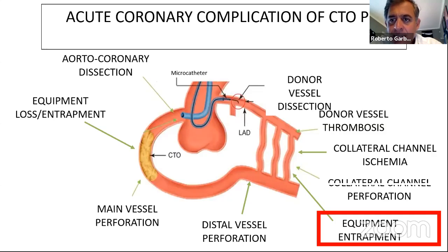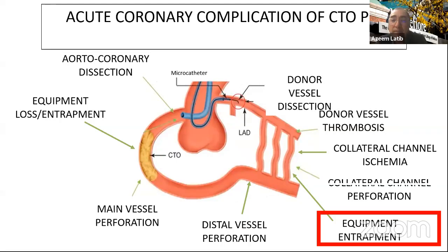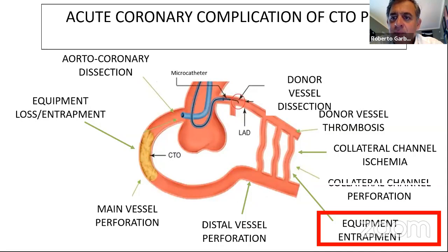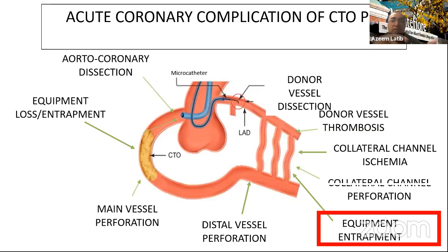Recommended detachable coil systems include the EV3 Concerto coil, which is very good; the Stryker Target coil, which is fantastic; and Microvention coils, which are also excellent. These are the three best detachable coil systems for coronary perforation. When coiling collateral perforations, always be concerned about bleeding from the other side of the collateral — from the reopened target vessel feeding retrograde into the perforation site.